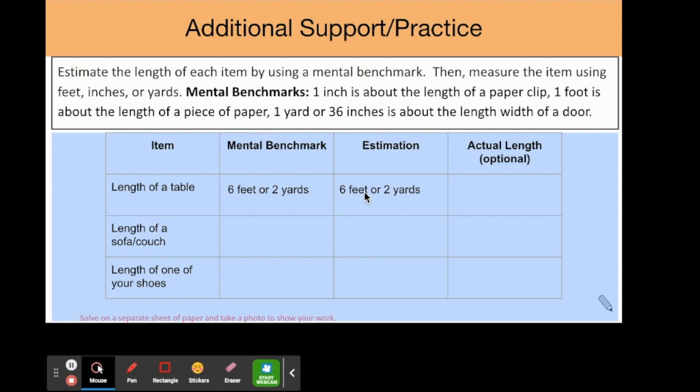However, when I actually measured my kitchen table using the yardstick, I measured two yardsticks and one more foot. That means my kitchen table is actually seven feet long. My estimate was not that far from the actual measurement - that's great!